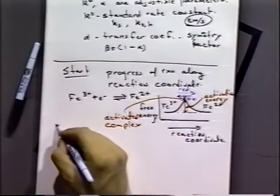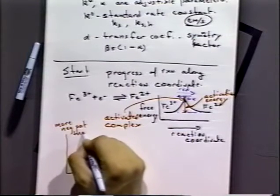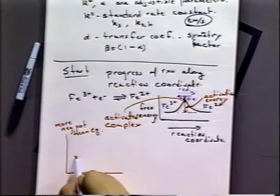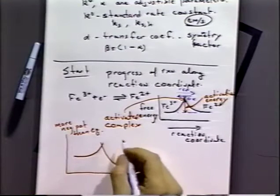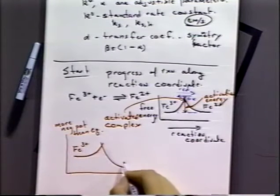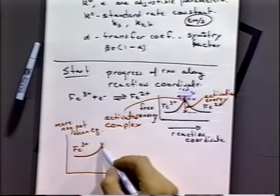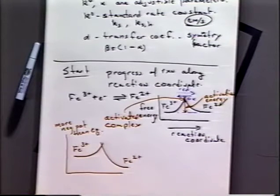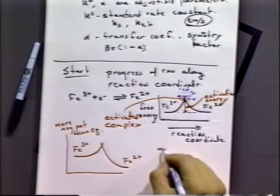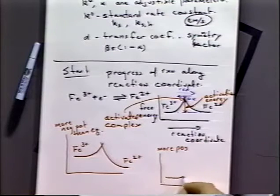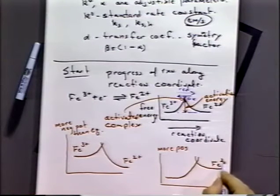What we can do that's very interesting in electrochemistry is we can change the free energy of our system. We can change the amount of free energy available to the system by changing the potential. If we put in a more negative potential than the equilibrium potential, those curves will shift, and now it's much more likely that we're going to end up with iron 2+ than iron 3+. So the net flow, as soon as we have enough energy to get over that barrier, is going to be to iron 2+. On the other hand, if we have a more positive potential, the opposite will occur, and it's easier to make iron 3+ than iron 2+.